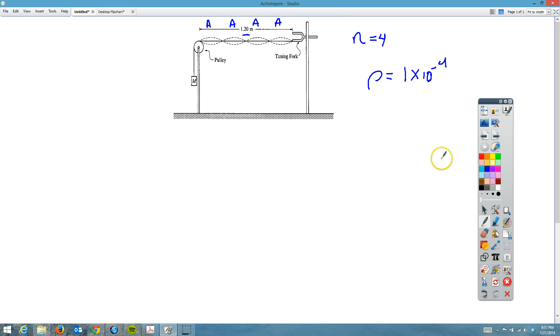The first thing they want us to do is determine the wavelength of the wave. To find the wavelength, we know that for a string, the wavelength of the wave is equal to 2 times the length of the string divided by the number of loops. For this one, we know that the wavelength is equal to 2 times 1.2 meters divided by 4.